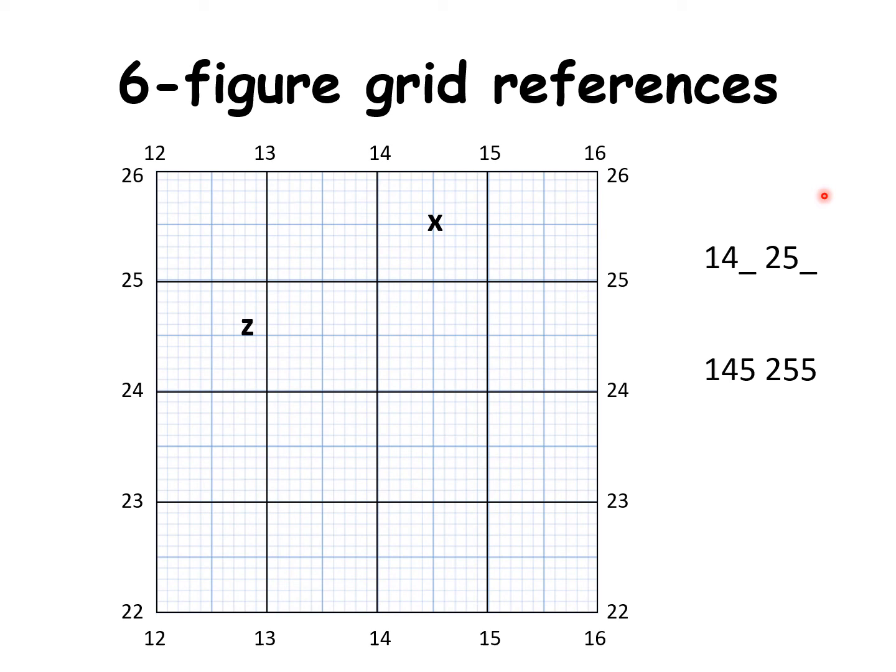So let's do another one. This time we're going to have a look at Z. So the first thing we do is we calculate the four-figure grid reference of Z. And it's 12, 24. You can see it's in column 12. And you can see it's in row 24. And we need to add an extra number here and an extra number here.